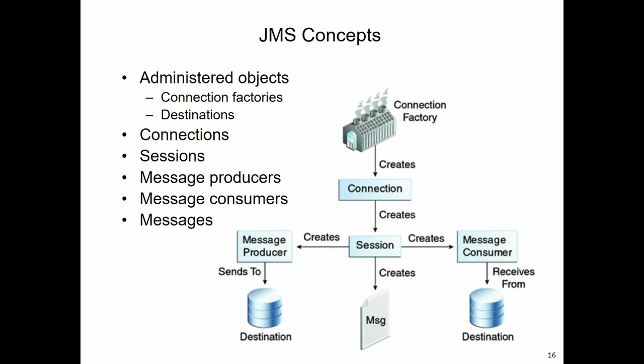Then the client will create - going to the left - a message producer for a given destination, or going to the right, a message consumer for a destination. So it's very possible that we have one client that creates a message producer for destination X, and another client that creates a message consumer for destination X - and that's how they communicate through that destination. If that destination is a queue, it will be point-to-point. If it's a topic, it will be publish-and-subscribe.